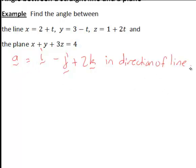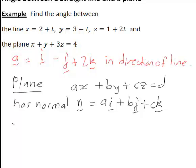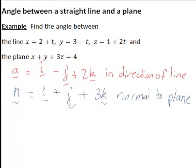We've found that vector in the direction of the line. The next thing we need to do is find a normal vector to the plane. Recall that when we're looking at the plane, if a plane has the form ax plus by plus cz equals d, then it will have a normal vector, meaning a vector perpendicular to it, of the form ai plus bj plus ck. So if we look at our plane, here we had x plus y plus 3z equals 4, so the normal vector is going to be i plus j plus 3k.